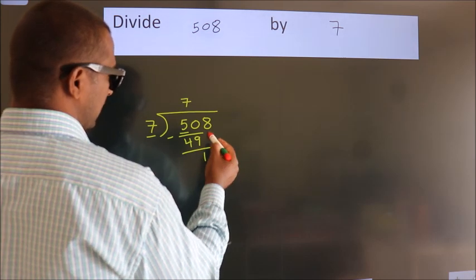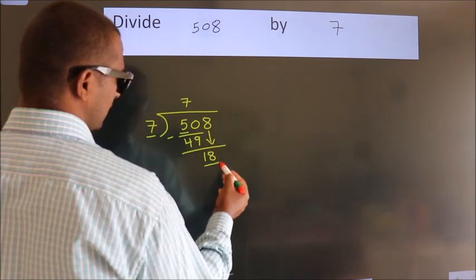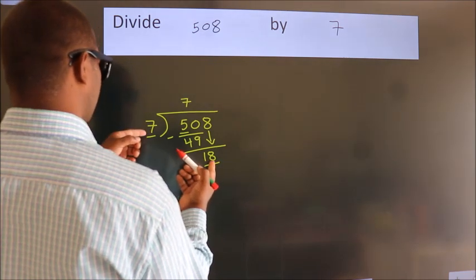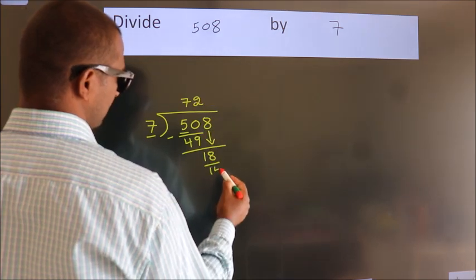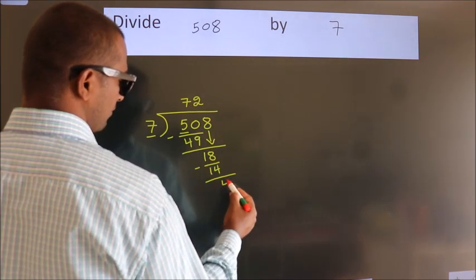After this, bring down the beside number. So, 8 down. So, 18. A number close to 18 in the 7 table is 7 times 2 equals 14. Now we subtract. We get 4.